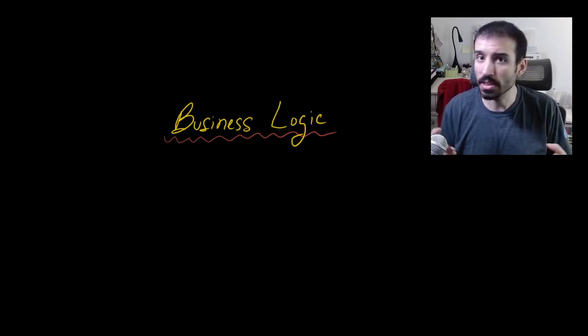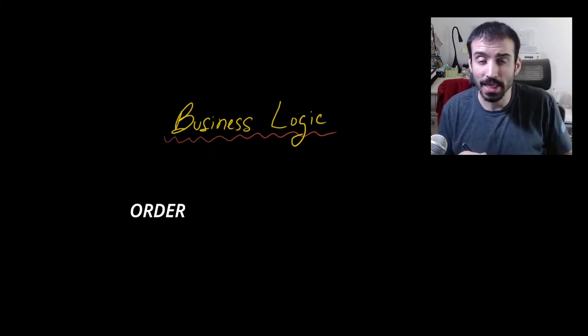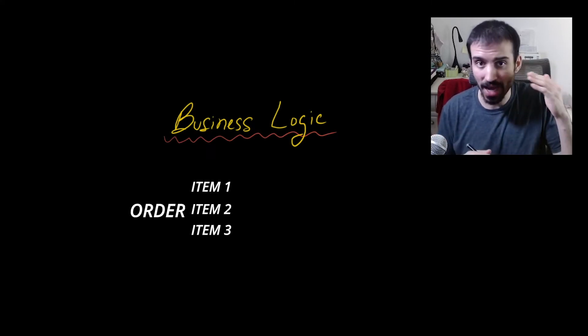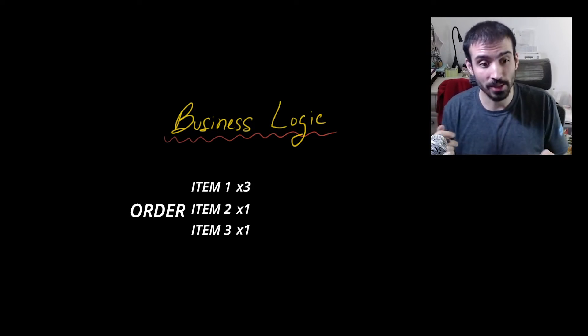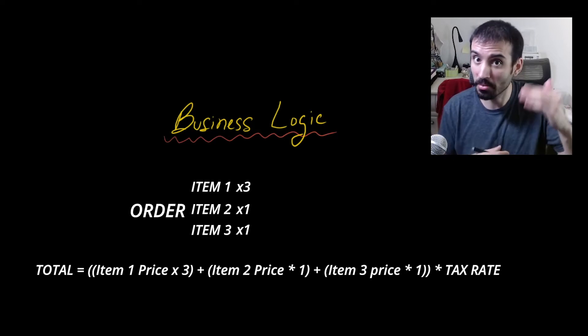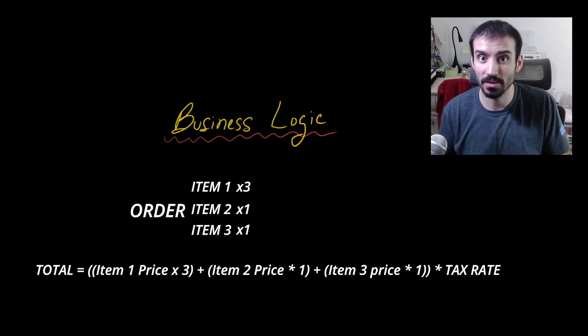So what are the entities in this problem? Well, you probably have some concept of an order, and then within that entity you may have items and then a quantity of items, and each item costs an amount, and the order total is the sum of all those amounts times some figure that says this is how much tax you have to pay.